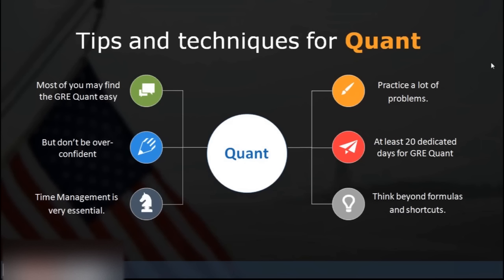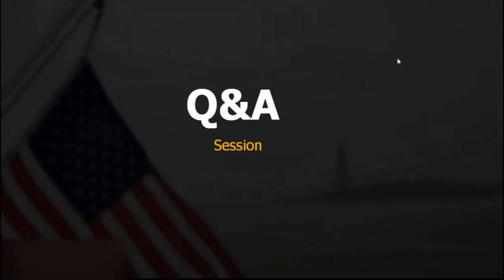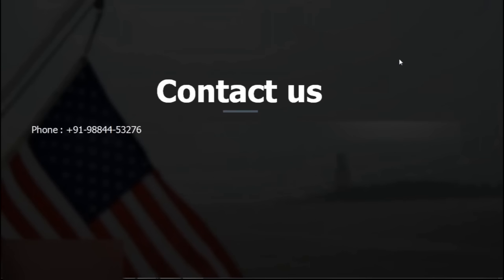Three and a half hours a day for 45 days will completely decide what you're going to do in the next three to four years. You can contact us via WhatsApp or call at 9884453276, or email at info@greedge.com. Thank you, and I hope to see you in the upcoming seminars. This is Vishnu signing off — good evening and take care.